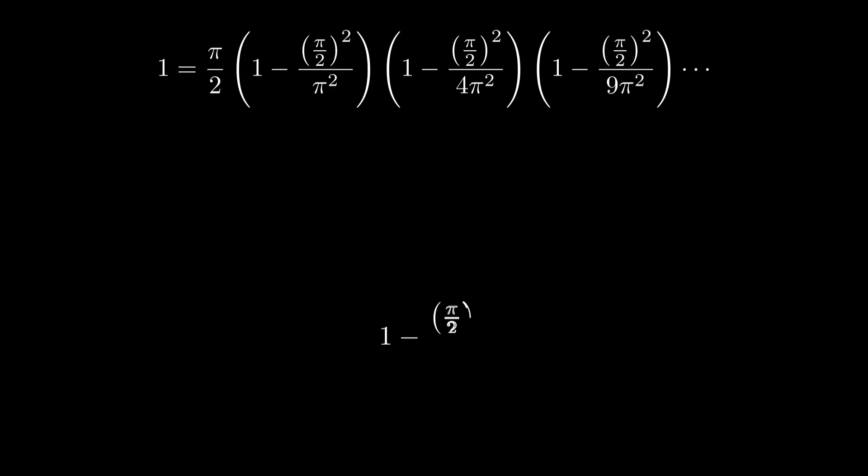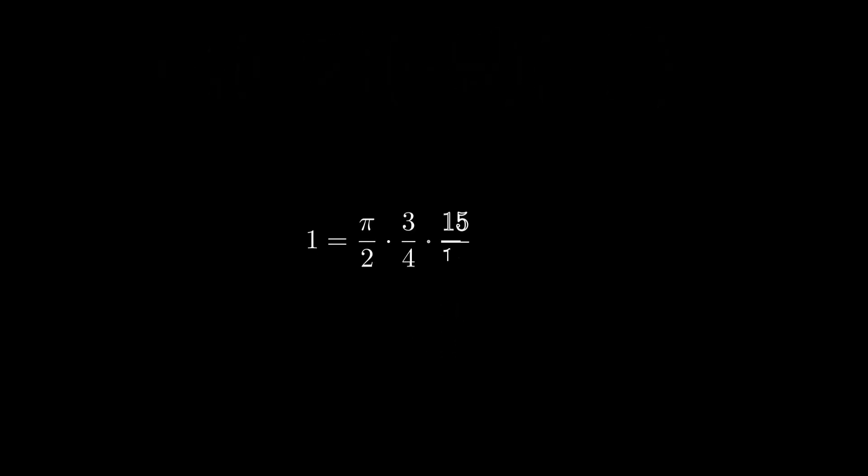For the first term, 3 fourths equals 2 minus 1 times 2 plus 1 over 2 squared, which is 1 times 3 over 2 times 2, or 1 half times 3 halves. Substituting these back, we get 1 equals pi over 2 times 3 fourths times 15 sixteenths times 35 36ths, and so on.